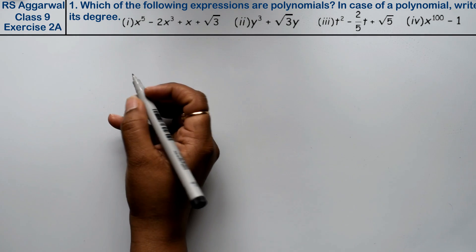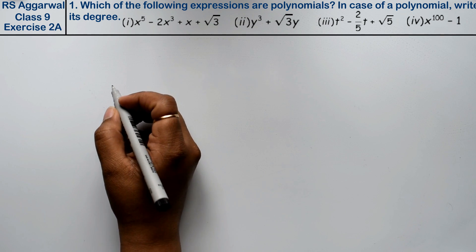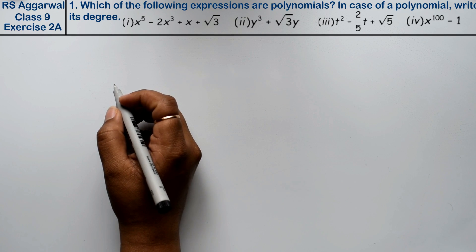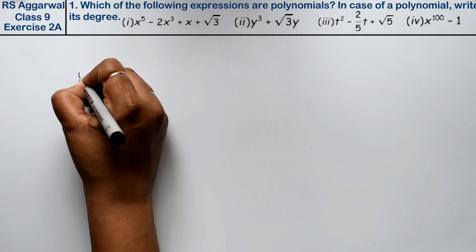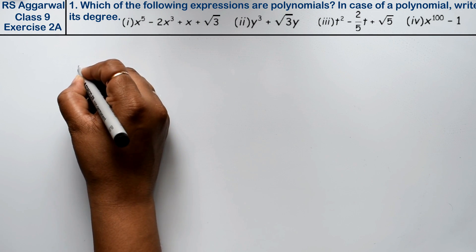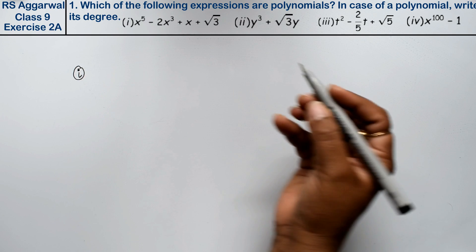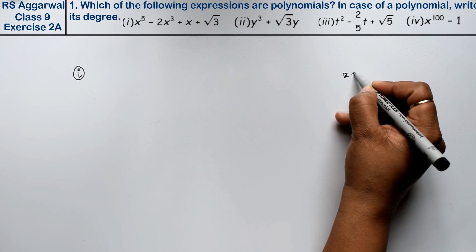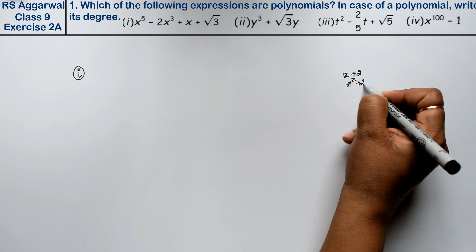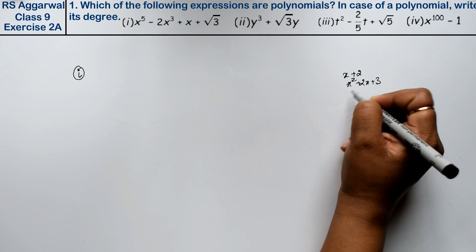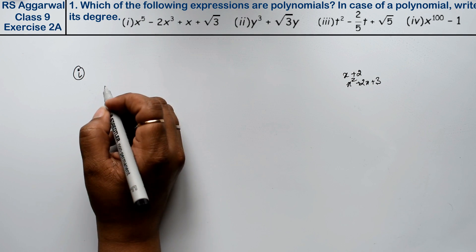Let's do question number one of Exercise 2a, that is polynomials. Question number one is: which of the following expressions are polynomials? In case of a polynomial, what is its degree? A polynomial is an expression like x plus 2, x squared plus 2x plus 3. These all are polynomials.